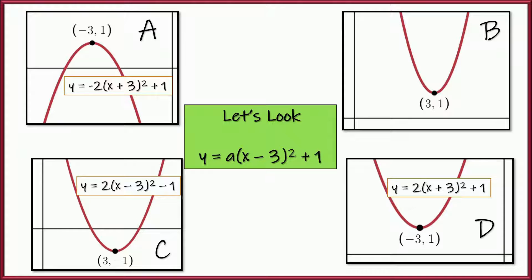Let's look at equation D: y equals 2 times x plus 3 squared plus 1. That's exactly the same as graph A except the coefficient is positive 2 instead of negative 2. This one opens up; A opens down. Comparing to our target equation — x minus 3 squared plus 1 — the 1's match but the 3's are opposite. So vertex coordinates: the 1's match but the 3's don't. It's not A, not C, not D.